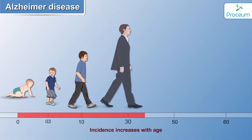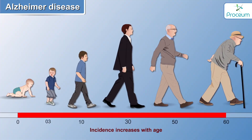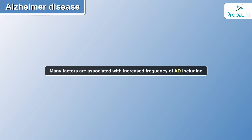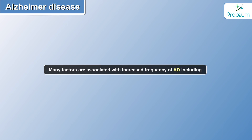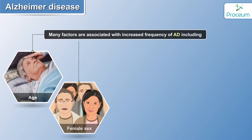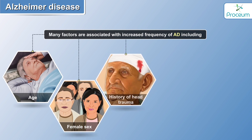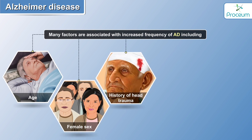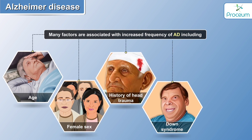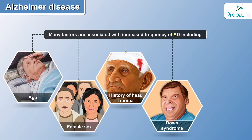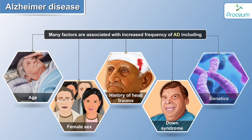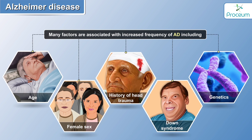The incidence of Alzheimer's disease increases with age. There are a number of factors associated with increased frequency of Alzheimer's disease, which includes growing age, female sex, a history of head trauma, Down syndrome, and some conclusive evidence of a genetic component involved.